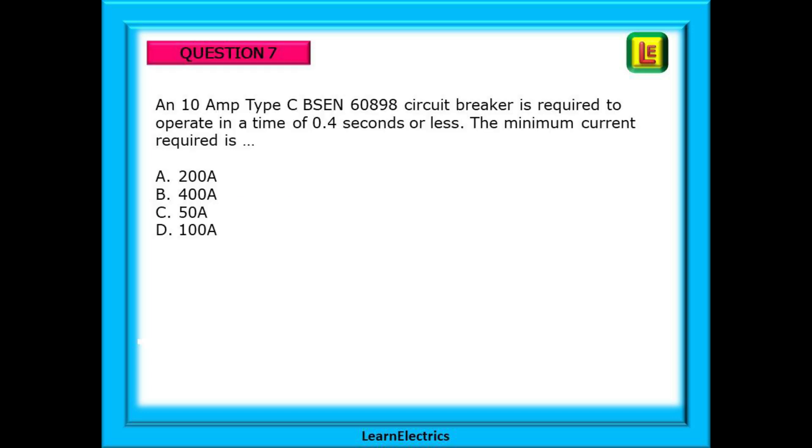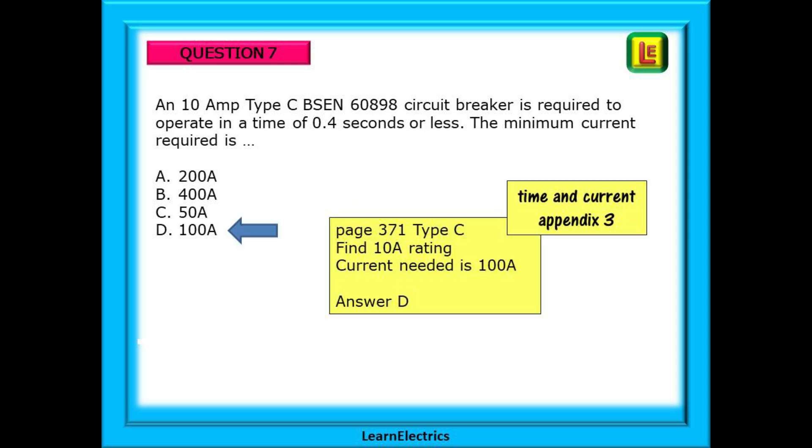And now question 7. The question is: A 10-amp type C BS EN 60898 circuit breaker is required to operate in a time of 0.4 seconds or less. The minimum current required is... Pause the video before continuing. This is a time and current question again, so the answer will be found in Appendix 3, on page 371. The fault current needed is 100 amps, so choose answer D.